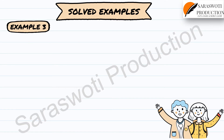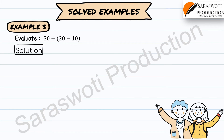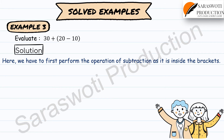Example 3: Evaluate 30 plus (20 minus 10), where 20 minus 10 is given in brackets. We first perform the subtraction inside the brackets: 20 minus 10 equals 10. So 30 plus 10 equals 40.